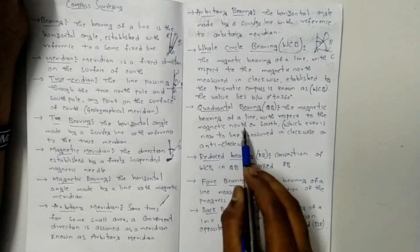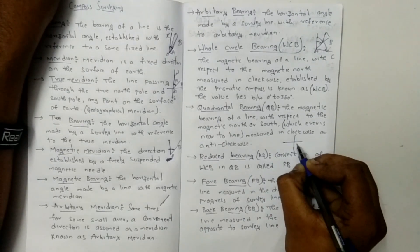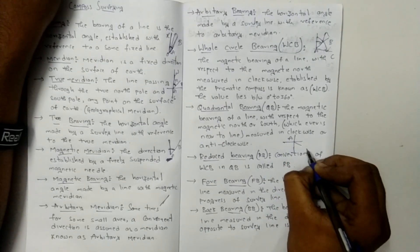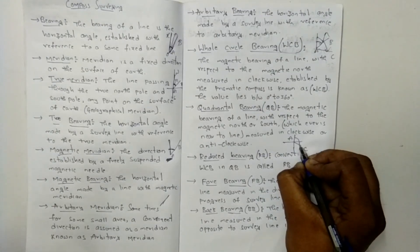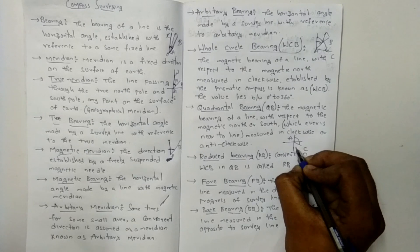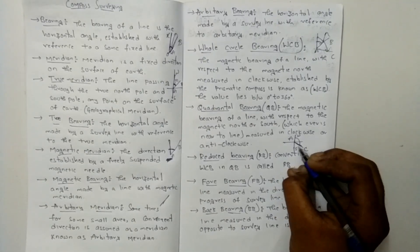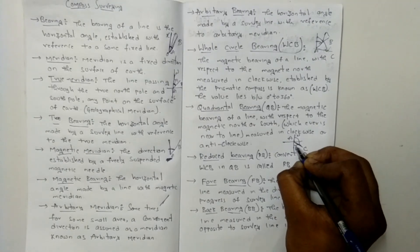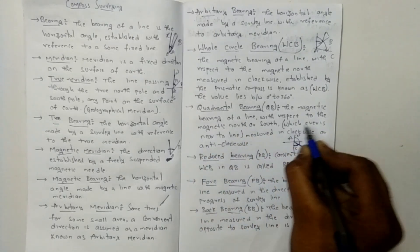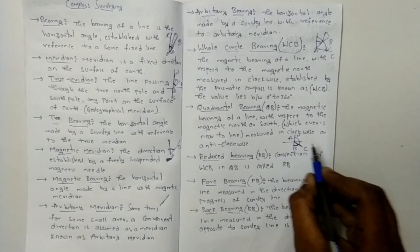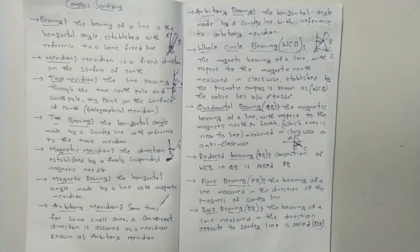The magnetic bearing of a line with respect to the magnetic north or south, whichever is nearer to the line, measured clockwise or anticlockwise to indicate the exact direction, is the quadrantal bearing.